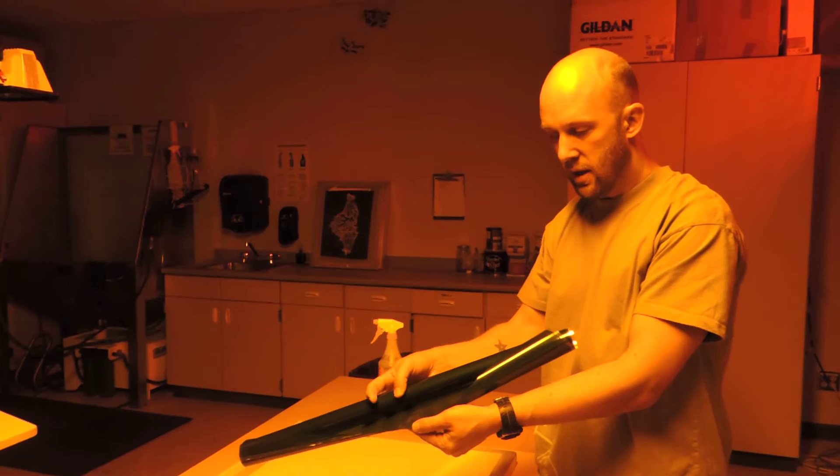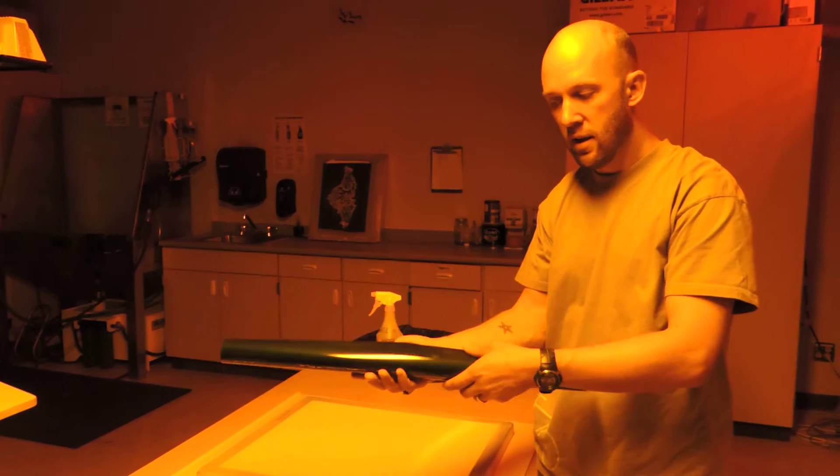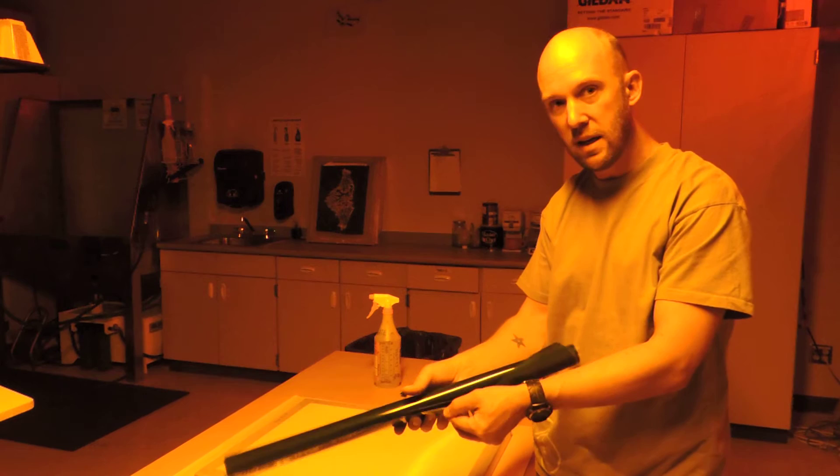Now emulsion is basically a polymer based emulsion that is being held on there by this plastic on the outside. This plastic is not the emulsion, this is what is holding it on, all the emulsion is on the inside. So you want to be careful with this.